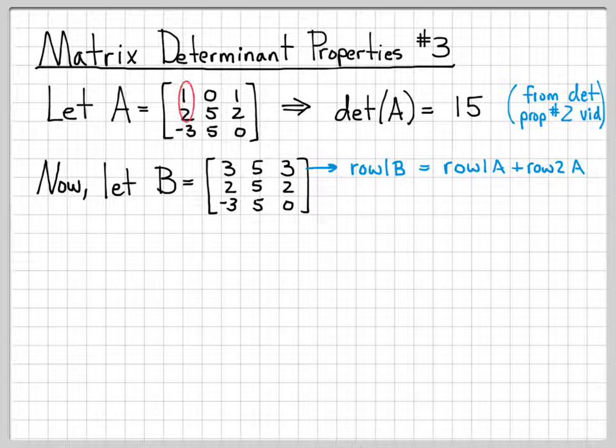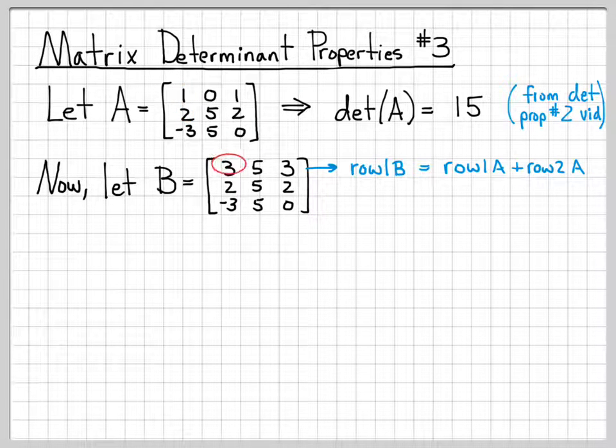Because 1 plus 2 is equal to 3, and 0 plus 5 is equal to 5, and 1 plus 2 is equal to 3.